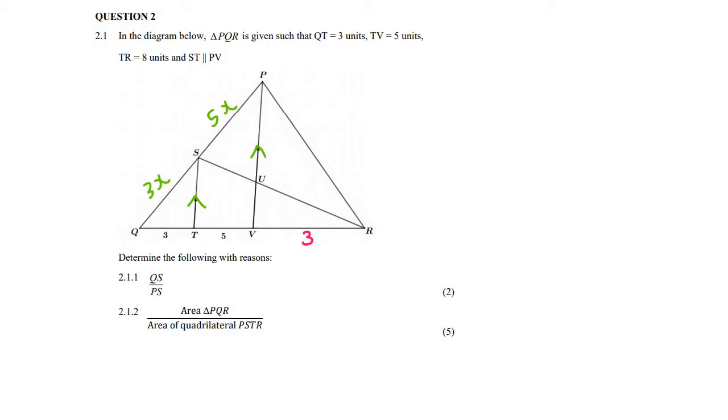Now, for 2.1.2, it says the area of triangle PQR, because that's the entire triangle, over the area of quadrilateral PSTR. Wow, so this looks quite interesting. So I must be honest, I had to sit and look at this question for quite some time, because I was trying to work out the area of the quadrilateral directly, but there is no way to do that.